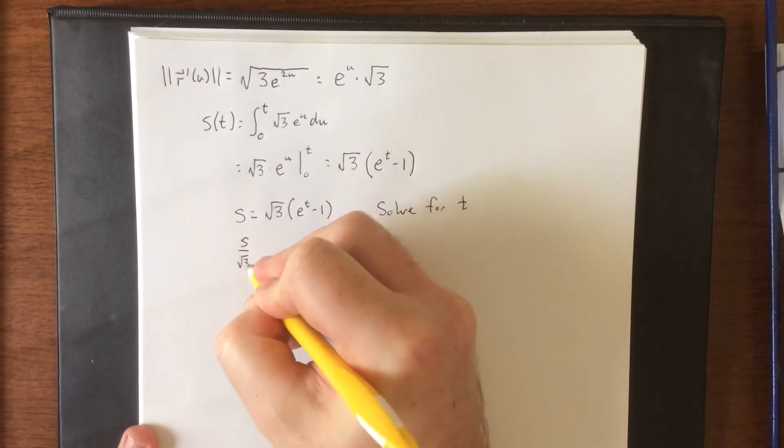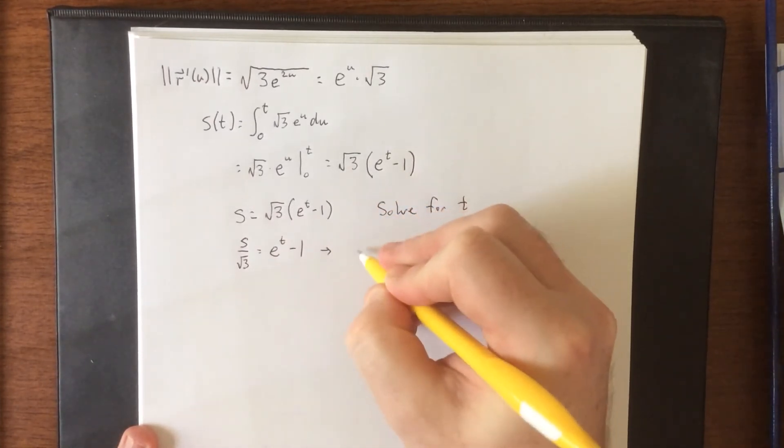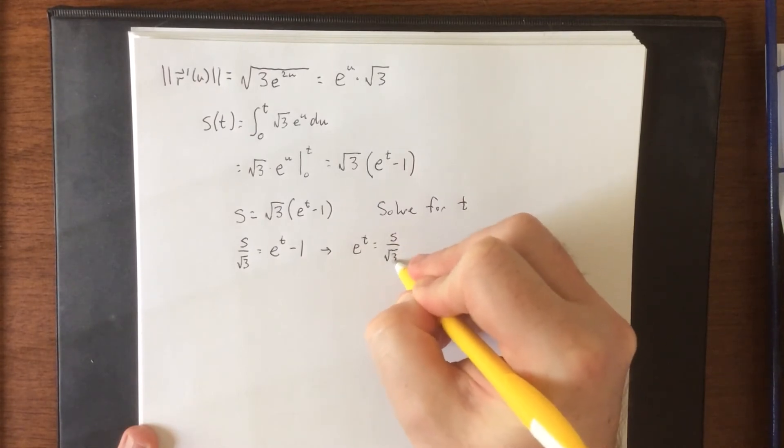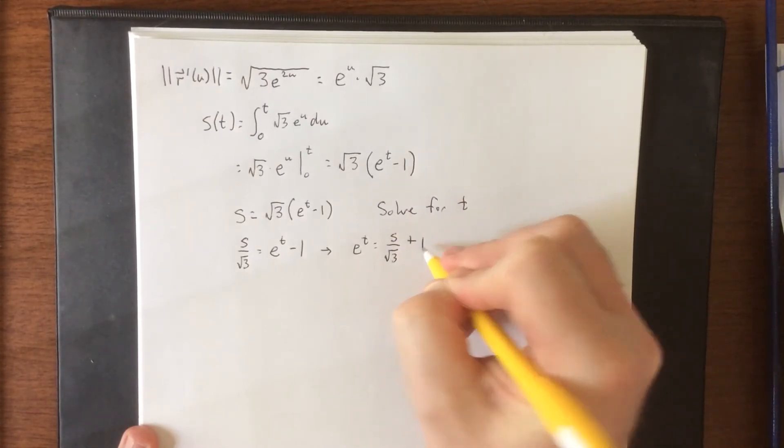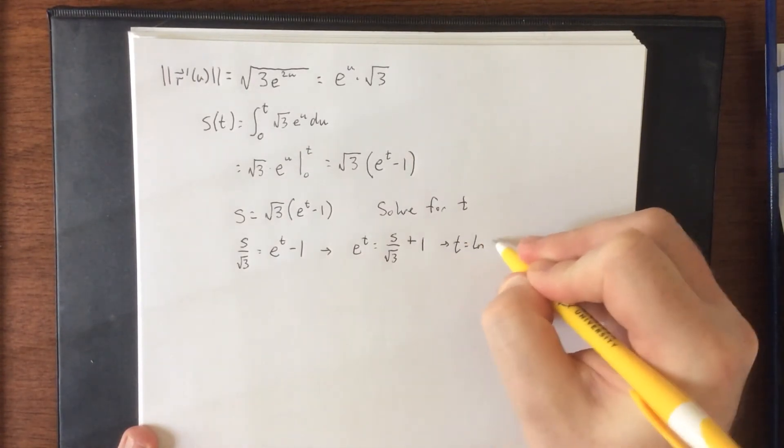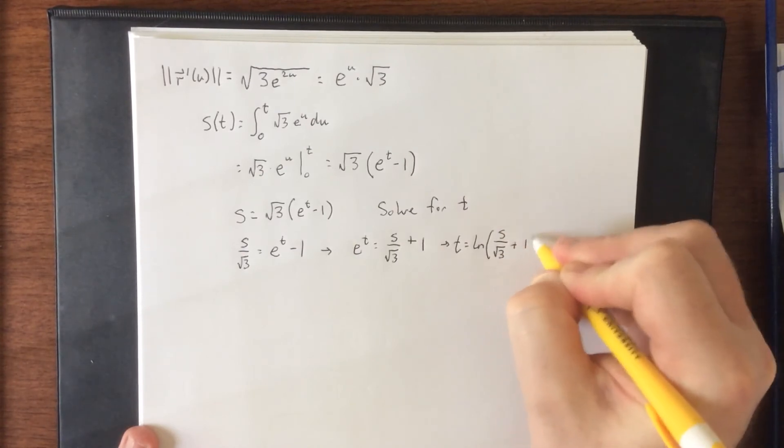So s divided by the square root of three is equal to e to the t minus one. So e to the t is going to be equal to s over the square root of three plus one, not in the same fraction. Therefore t is going to be equal to the natural log of s over the square root of three plus one.